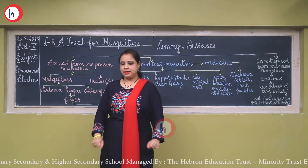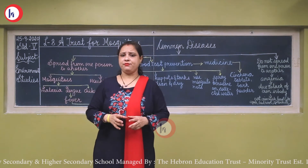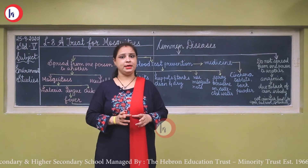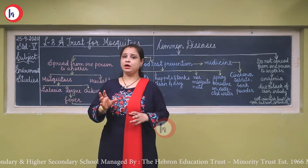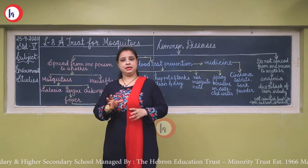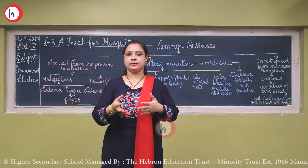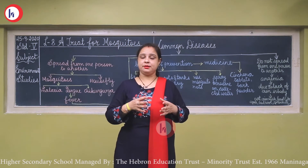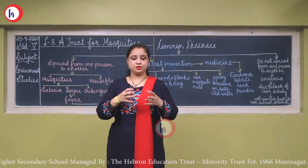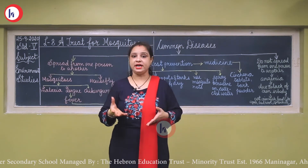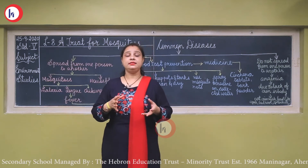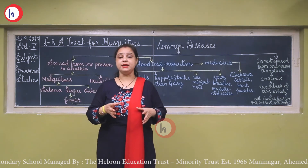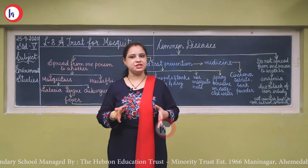If a person is having anemia, they should eat amla, jaggery, and more leafy vegetables.